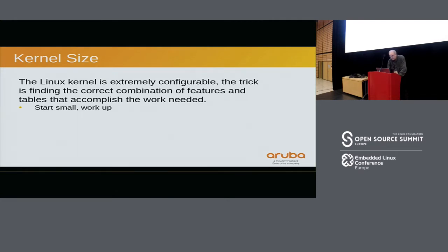The Linux kernel is very configurable. The trick is finding the right combination of kernel configurations and tables and various pieces that go together to make it work. In the switch, we use a RAM-based system — it's completely memory-based. That includes the kernel, all the routing tables, and the user land as a RAM disk. The trick here is you start small. If you start small and build your way up, you end up with a much more manageable size.